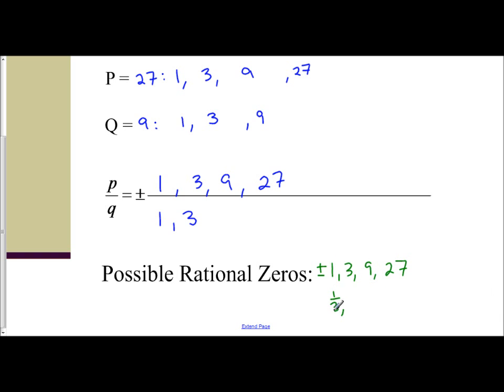So the only one I need to write down is 1 third because I've already written down the other ones. So we don't write down repeats. And then you take and divide by the next Q value, which is 9. And so you have 1 divided by 9 is 1 ninth. 3 divided by 9 is 1 third. 9 divided by 9 is 1. 27 divided by 9 is 3. All of those are already accounted for. So my list of possible rational zeros, plus or minus 1, 3, 9, 27, plus or minus 1 third, and 1 ninth. And so this is my list.